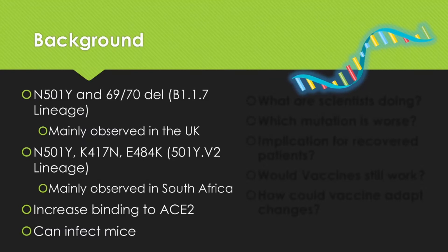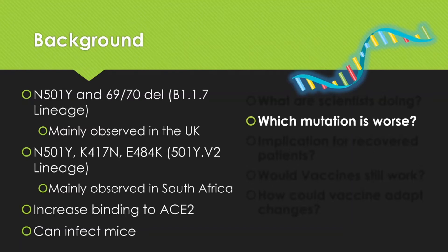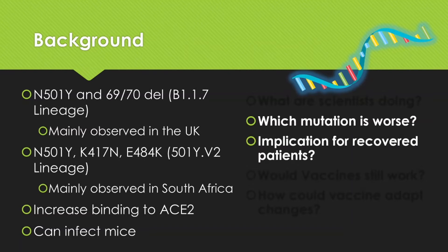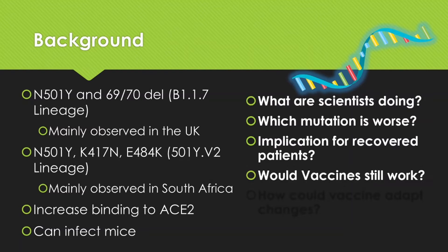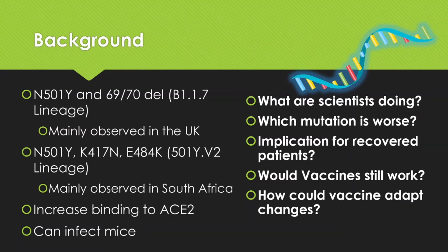Let's look at some background — a recap. The N501 and 69-70 deletions, the so-called B117 lineage, was first observed in the UK. Now there is a very closely related lineage called the 501Y.V2 lineage. It contains three major mutations: the N501Y, K417N, and the E484K mutation, mainly observed in South Africa. All of these mutations have been shown to increase binding to ACE2 receptors and also help the virus gain the ability to infect mice. Today we'll look at what scientists are doing, which mutation is the worst, implications for recovered patients, and whether vaccines work and how they could adapt to these changes.